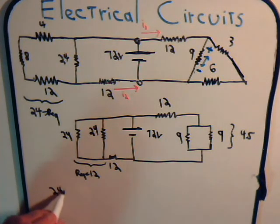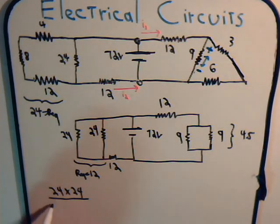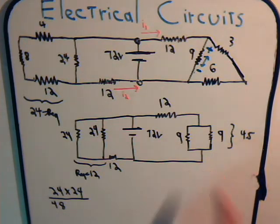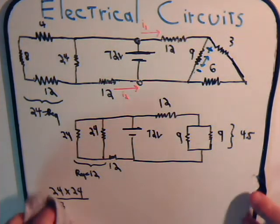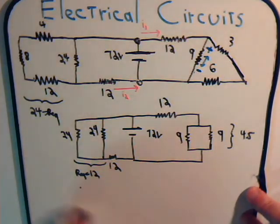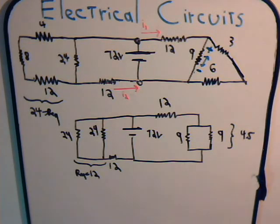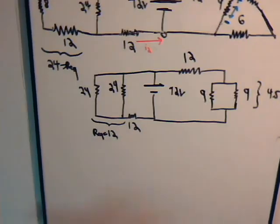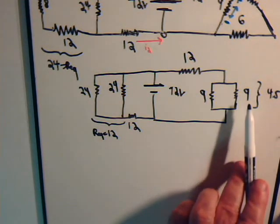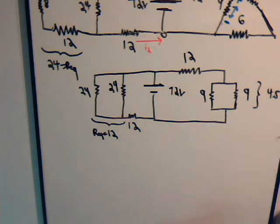These are in parallel, so the equivalent resistance is R1 divided by the sum, and this is one half times 24. We can replace the parallel combination with a single 12 ohm resistor, and we can replace these with a single 4.5 ohm resistor.